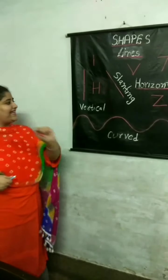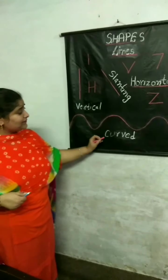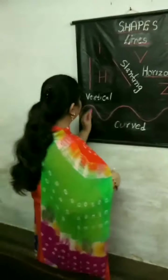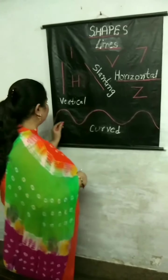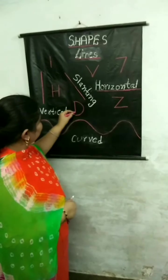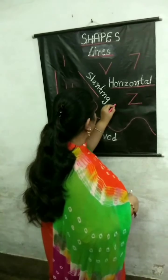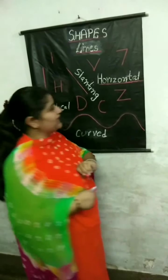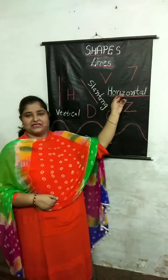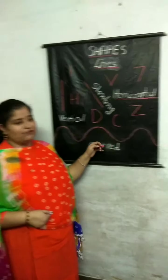Now, my dear students, one more type is there — that is curved lines. You could see curves here. If you have to draw the alphabet D, you will use a standing line and then a curve. In the same way, if you have to draw S or C, you will use the curved lines. So, have you understood the concept of these different types of lines?